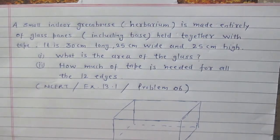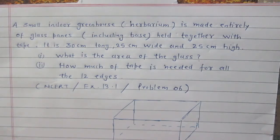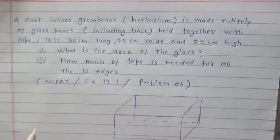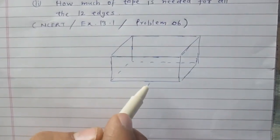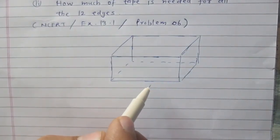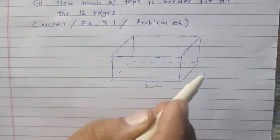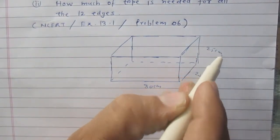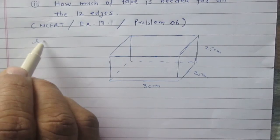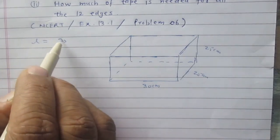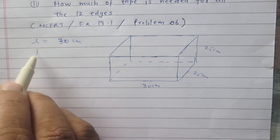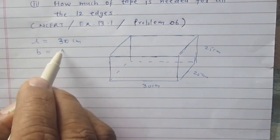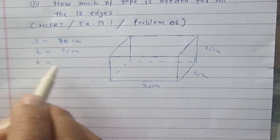We are given an indoor greenhouse in the form of a cuboid. In the first part, we are to find the total surface area of the cuboid to get the area of the glass used. The length of this cuboid is 30 centimeters, the breadth is 25 centimeters, and the height is also 25 centimeters. Let L = 30 cm, B = 25 cm, and H = 25 cm.